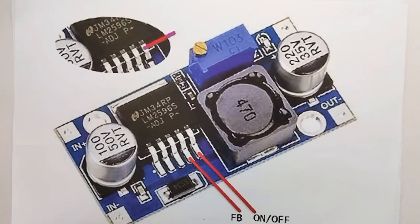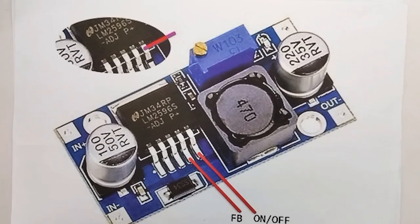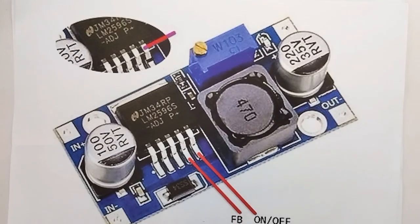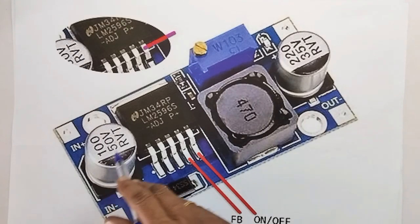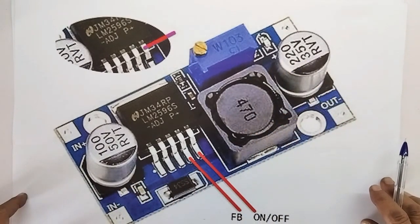You can use it as a buck inverter board. You can use it as an assembly and as an application. If you look at this board, there is an IC in 5 pins — LM2596. There are two capacitors each at the input and output.